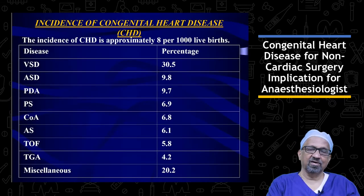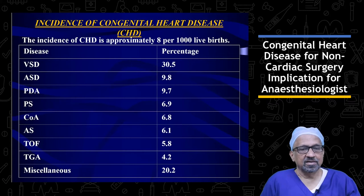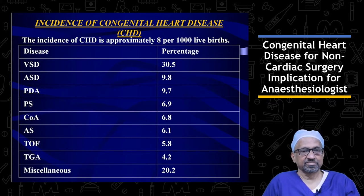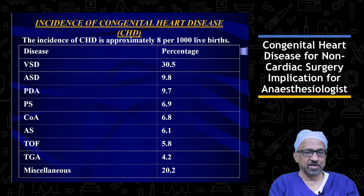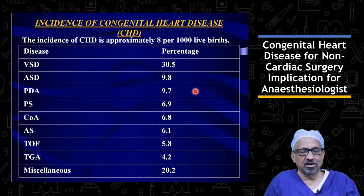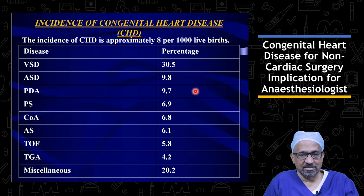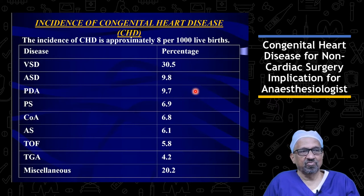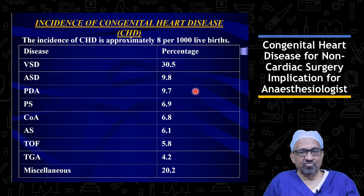If you look at the table showing the incidence of congenital heart disease, VSD tops the list, which means that VSD is the commonest congenital heart disease we encounter in clinical practice. We should understand that this does not include bicuspid aortic valve, which is also a congenital heart disease not included in this tabulation because the bicuspid aortic valve manifests later in life, after 20, 30, or 40 years.